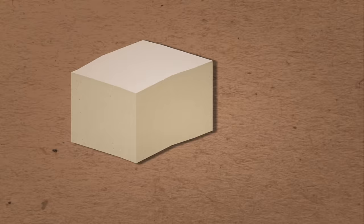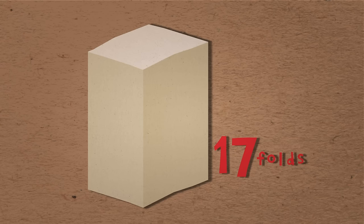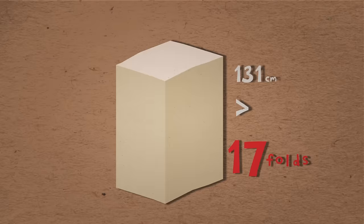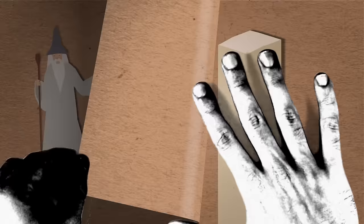Assume we continue folding the paper in half. What would happen then? If we fold it 17 times, we'll get a thickness of 2 to the power of 17, which is 131 centimeters, and that equals just over 4 feet.